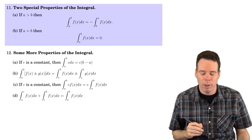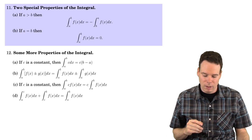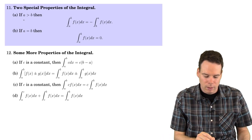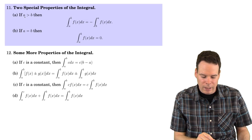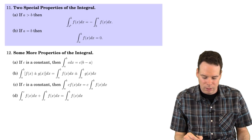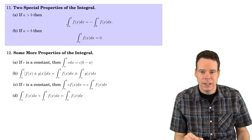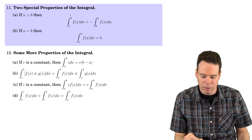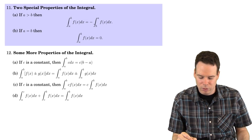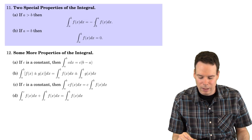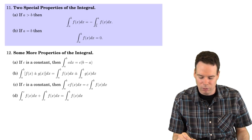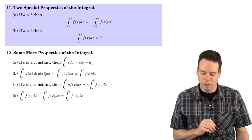Now let's look at a few more properties of the integral. If a is greater than b, meaning the lower limit of integration is a larger number than the upper limit of integration, it turns out that integral is equal to negative the integral where you switch the limits of integration, so the smaller number is below.